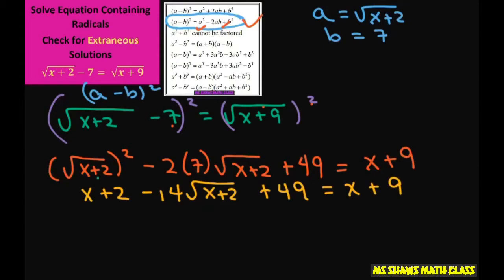Now these two x's cancel. 2 plus 49 is 51. So what I'm going to do is add these 51, I'm going to subtract the 9, and I'm going to add this. So I have 0 over here. I'm going to add this to both sides.